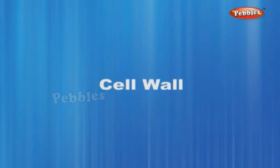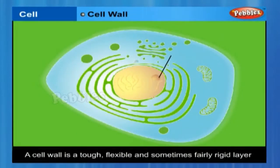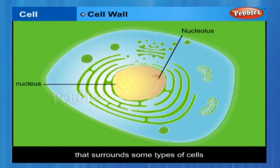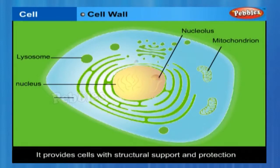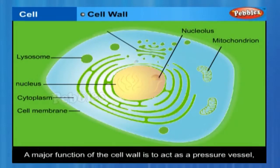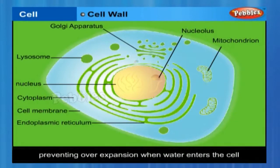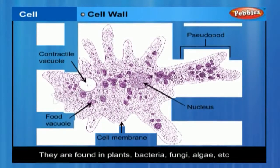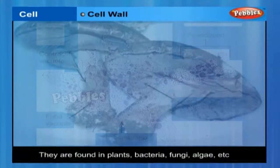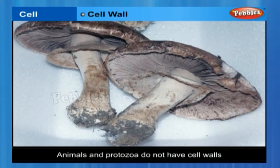Cell wall. A cell wall is a tough, flexible and sometimes fairly rigid layer that surrounds some types of cells. It is located outside the cell membrane and provides these cells with structural support and protection, and also acts as a filtering mechanism. A major function of the cell wall is to act as a pressure vessel, preventing the overexpansion when water enters the cell. They are found in plants, bacteria, fungi, algae and some archaea. Animals and protozoa do not have cell walls.